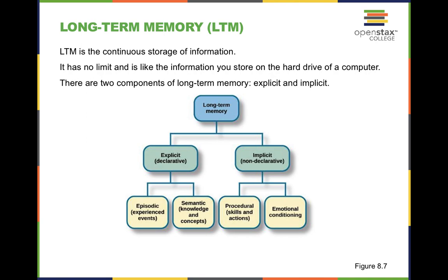Long-term memory can be broken up into explicit and implicit memory. Explicit memory, also known as declarative, includes your episodic memory and your semantic memory. Episodic memory is your ability to remember parts of your life like episodes or a storyline — you tell your friend a cool story and go through the storyline of it. Whereas semantic knowledge is not a storyline; it's just knowledge and concepts, like who's the president of the United States — things you're able to bring about and remember. Those are things you have conscious control over, relatively speaking.